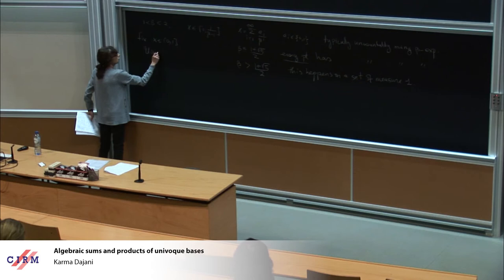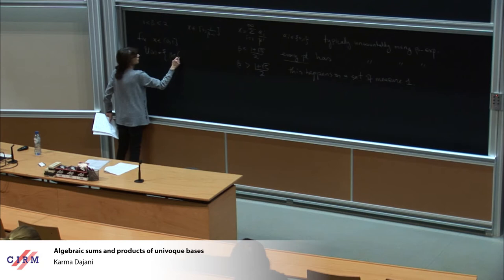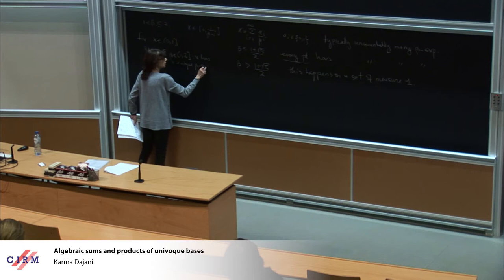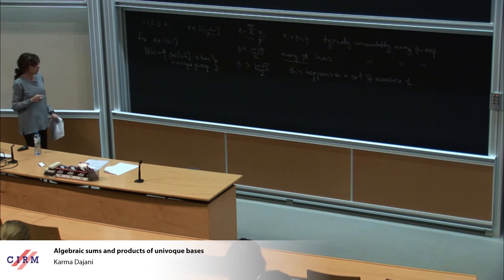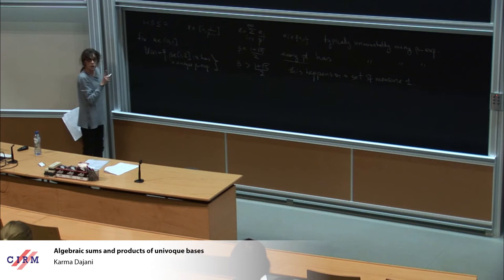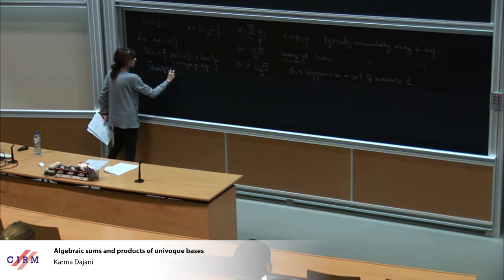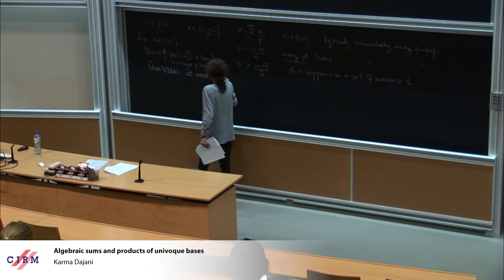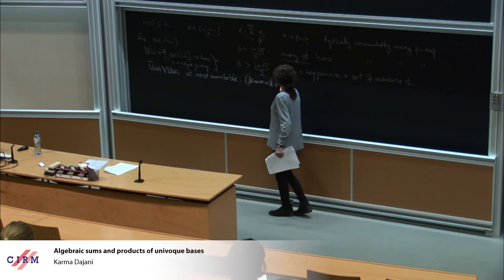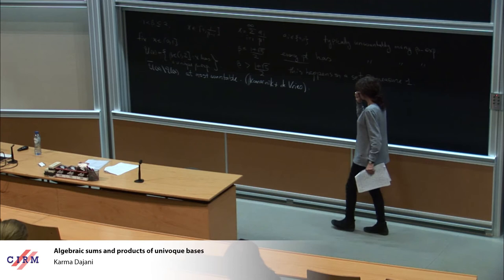I'll look at the set U_x, which is the set of all bases β for which x has a unique beta expansion. The topological structure of this set was studied by Komornik and de Vries. One thing I'd like to mention is that this is not necessarily closed — in fact it's almost closed in the sense that the closure of U minus U is at most countable. This is the result of Komornik and de Vries.